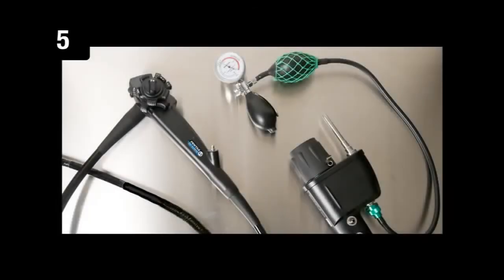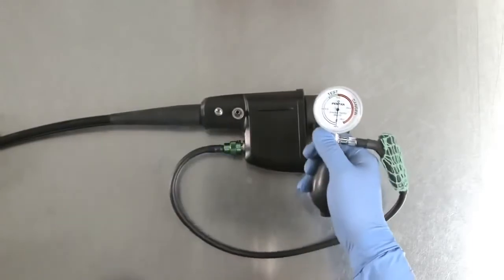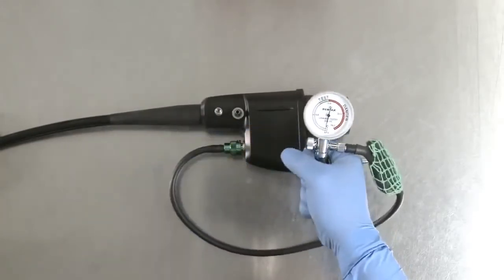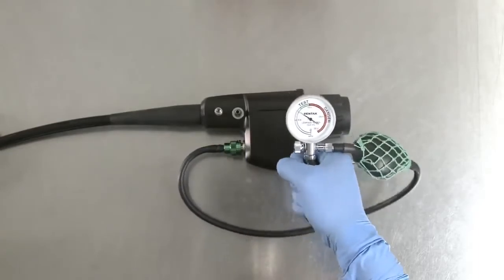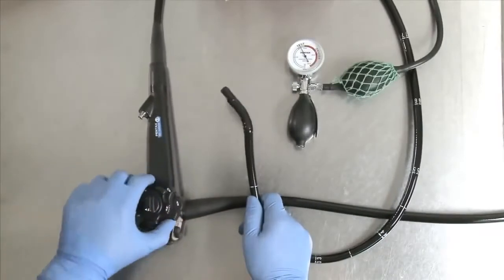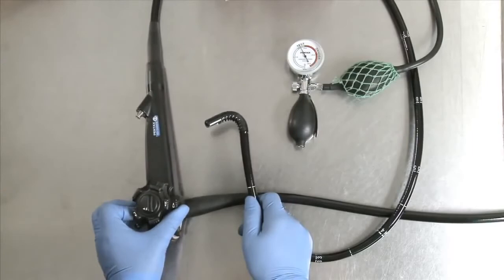Step 5: Perform the dry leak test. Attach the leakage tester to the venting connector and close the pressure relief valve. Pressurize the endoscope until the needle on the gauge moves into the green zone. Ensure that the control knob locks are in a free-moving position or unlocked and deflect the distal tip in all directions.